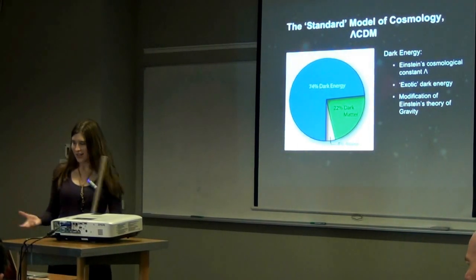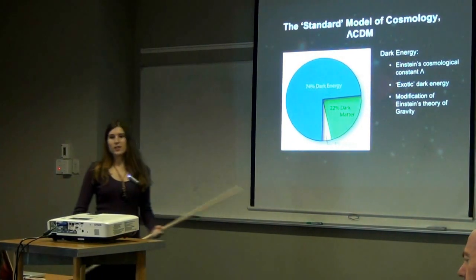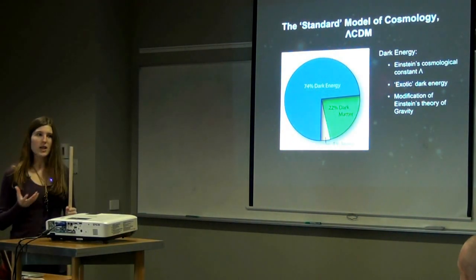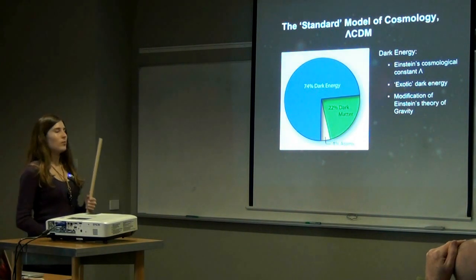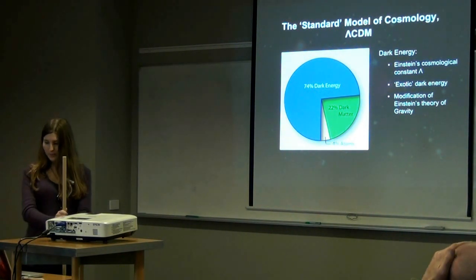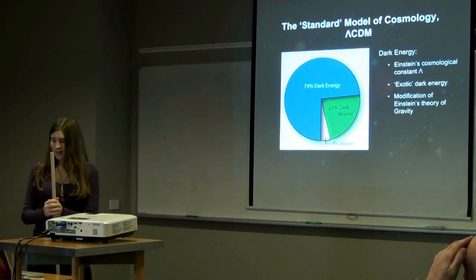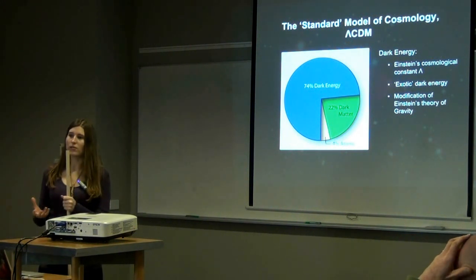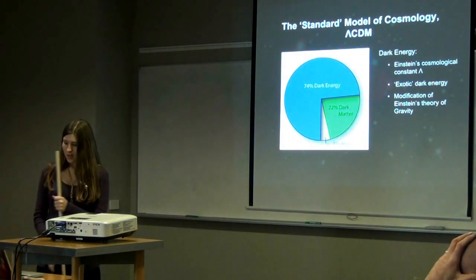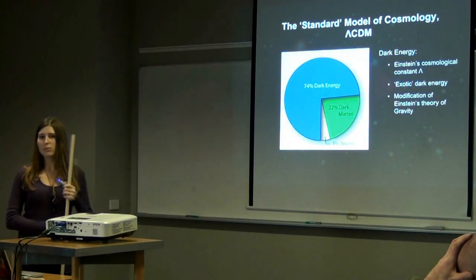There are a number of possibilities for what dark energy could be. In the standard model it's attributed to Einstein's cosmological constant, lambda, which acts like a vacuum energy — an energy density of space. But there are other possibilities. For example, there could be some exotic new form of energy causing the accelerated expansion. Or it could be that our theory of gravity breaks down on very large scales. We know that general relativity holds extremely well on solar system scales, but it could be that on much larger scales — much larger than galaxies — it actually breaks down, and we need a modification of our theory of gravity to explain the universe. My work is basically trying to distinguish between these different models.